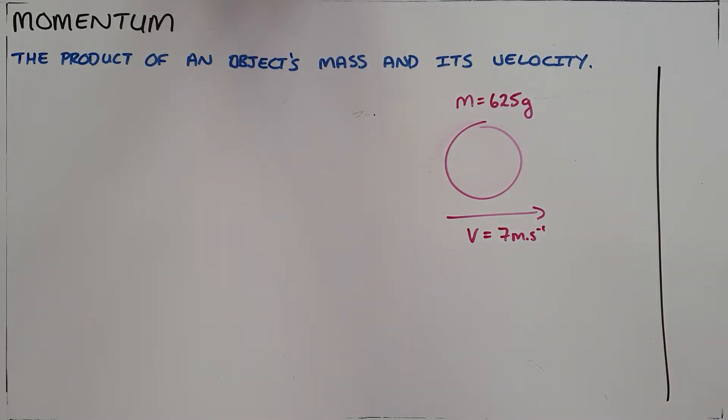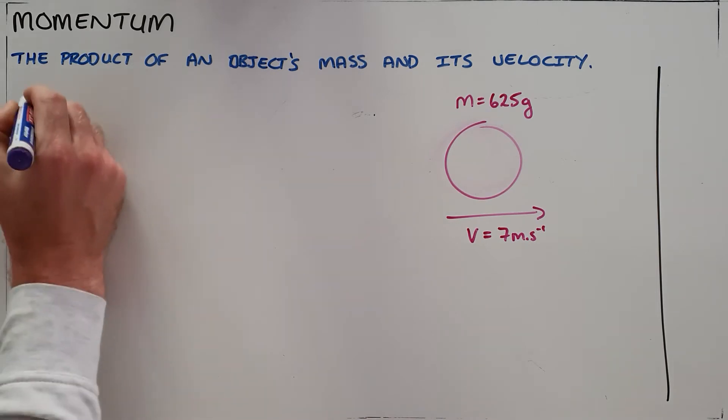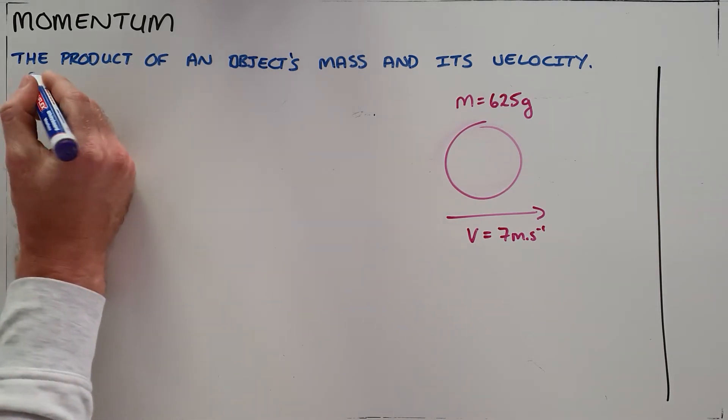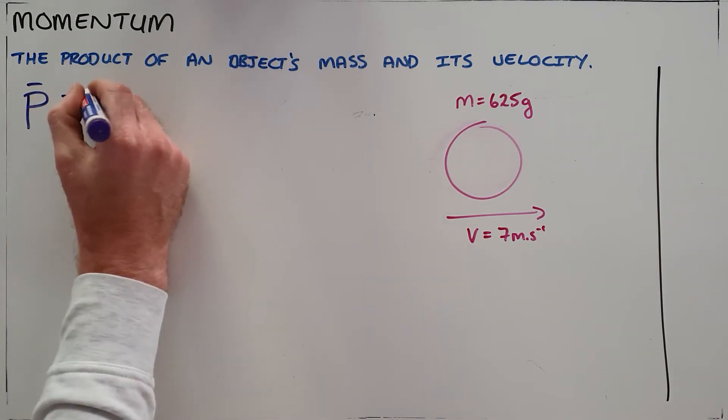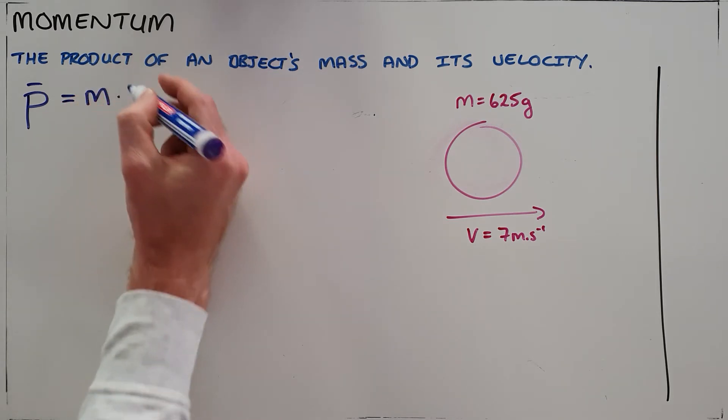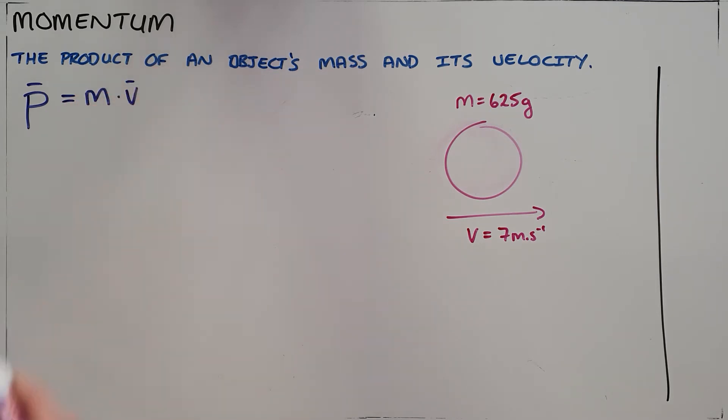Momentum is defined as the product of an object's mass and its velocity. So we can tell for any object, we can tell the amount of momentum with the symbol P by taking the product of that object's mass and its velocity.